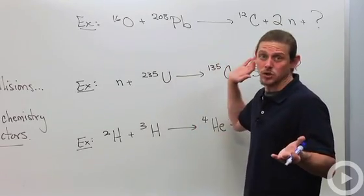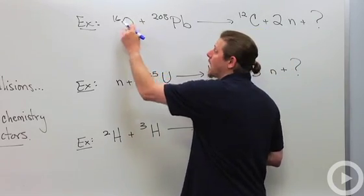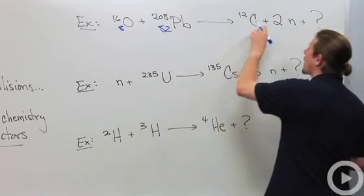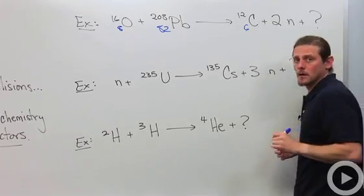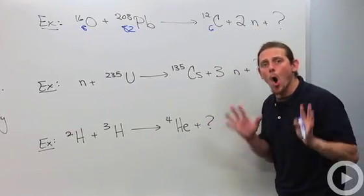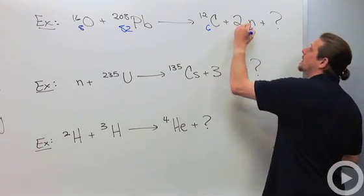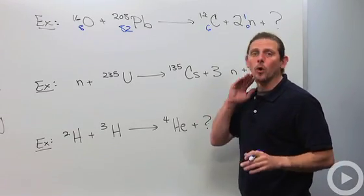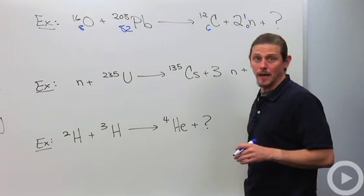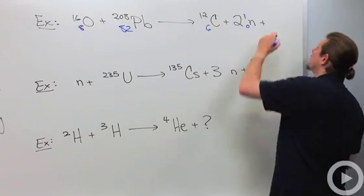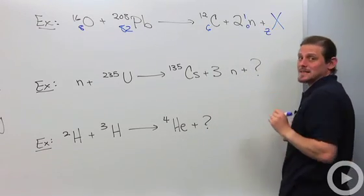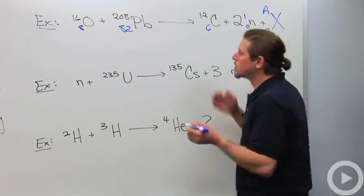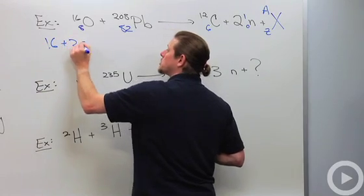So oxygen, oxygen's number 8 so I'll write it. Lead, lead's number 82 so I'll write it. Carbon, carbon is number 6. Neutrons have no protons, they're just neutrons so that means no charge, one atomic mass unit. Now let's go through and try to determine what this question mark has to be. I'm going to write it as X, and then we usually use a Z down here and an A up here.